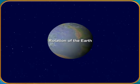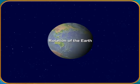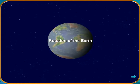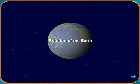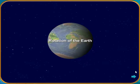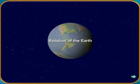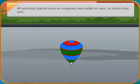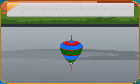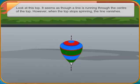Rotation of the Earth. All spinning objects have an imaginary line called an axis on which they spin. Look at this top. It seems as though there is a line running through the center of the top. However, when the top stops spinning, the line vanishes.